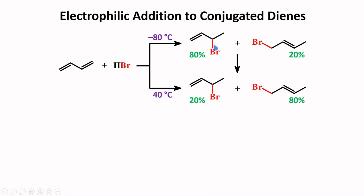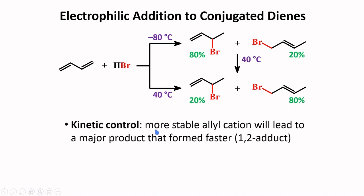If we heat this mixture to 40°C, there will be a shift in preference, giving the 1,4-addition product in higher proportion. Hence, we have kinetic control. In kinetic control, the more stable allylic cation leads to a major product that forms faster. Kinetic control allows the species that forms faster to be the major product of the reaction.